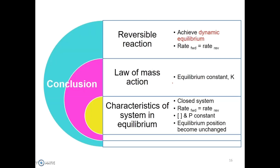In conclusion, a reversible reaction achieves dynamic equilibrium when the rate of the forward reaction equals the rate of the reverse reaction. The Law of Mass Action is related to the Equilibrium Constant K. The four characteristics of a system in equilibrium are: it must occur in a closed system; the rate of forward reaction must equal the rate of reverse reaction; the concentrations, pressure, and properties of reactants and products must become constant; and the equilibrium position remains unchanged regardless of the direction approached.